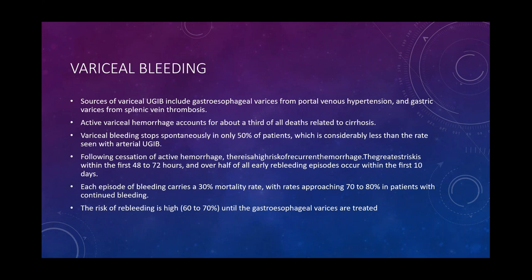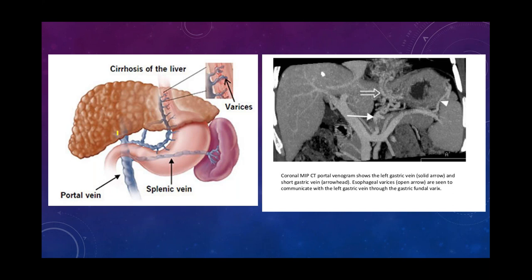Variceal bleeding is usually due to elevated portal pressures, and the risk of re-bleeding is high unless treated. Here we have an example of a cirrhotic liver with portal hypertension causing splenic varices; on this coronal MIP we can also identify esophageal and gastric varices. Endoscopic therapy — sclerotherapy and variceal band ligation — remains a treatment option but fails to control bleeding in about 10-20% of patients.